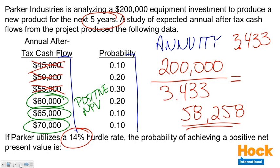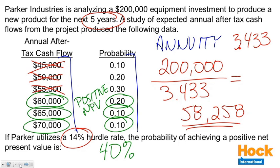What is the probability of a $60,000 cash flow? 20%. What is the probability of a $65,000 cash flow? 10%. And there's a 10% chance for a $70,000 cash flow. So we add these together and there is a 40% probability of this project having a positive net present value. It's really just a two-step question: what is the required cash flow, and then which annual cash flows in the table give us the necessary amount to achieve a positive net present value?